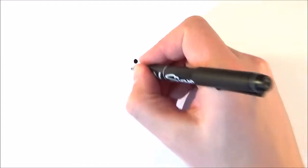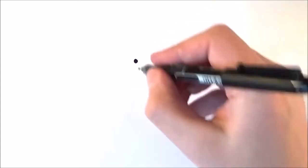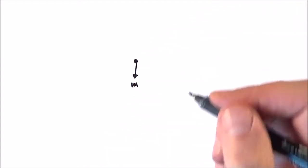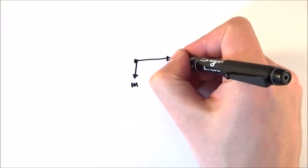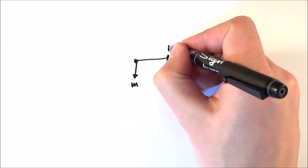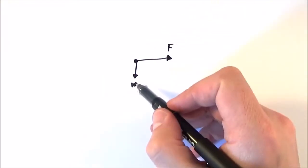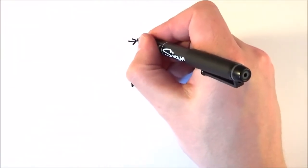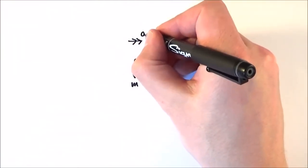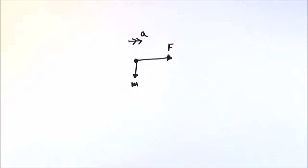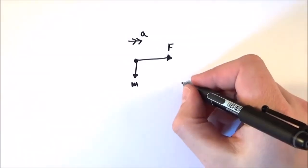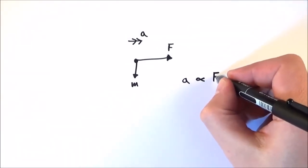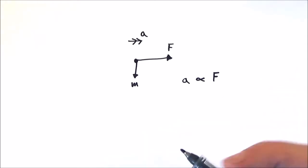Imagine we have an object that could be absolutely anything, and this object has a certain mass. We can apply a force to this object. If you apply a force to an object and there's a net force, then the object will tend to get faster and it will accelerate. The acceleration is proportional to the size of the force, so a bigger force means a bigger acceleration.